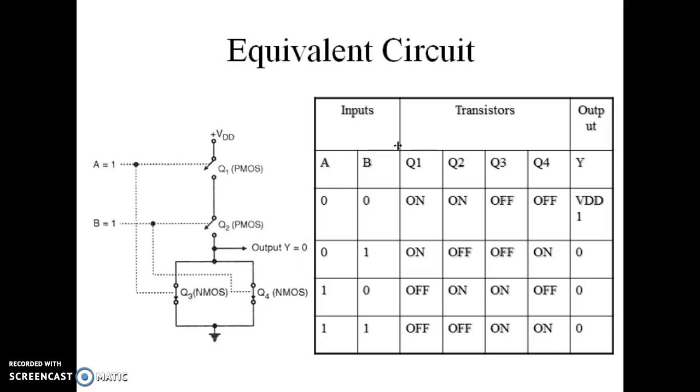The same truth table, the working transistor conditions are explained in this table. Both the inputs are A and B. Transistors Q1, Q2, Q3, Q4 are PMOS and NMOS, and output Y. So for 0, 0, Q1 and Q2 both are on, Q3 and Q4 both are off, so output is 1. For A equal to 0, B equal to 1, now Q1 is on, Q2 is off, Q3 is off, and Q4 is on, so output is 0. Like this, from the truth table we can see that this truth table works as A plus B bar, that is the NOR gate.